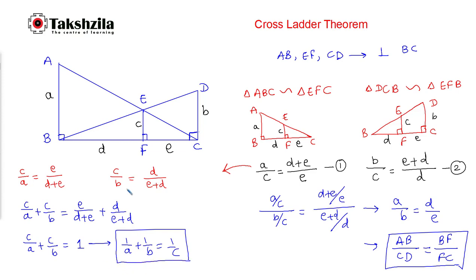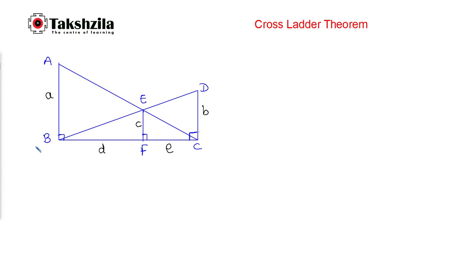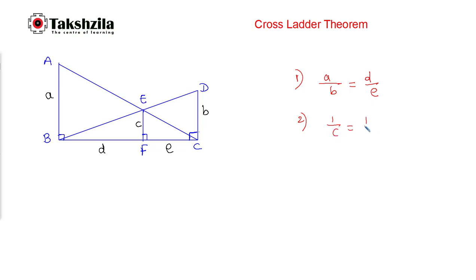Let me quickly revise the two concepts. The first concept is that the ratio of A and B is the same as the ratio of D and E. The second concept is that 1 upon C equals 1 upon A plus 1 upon B.